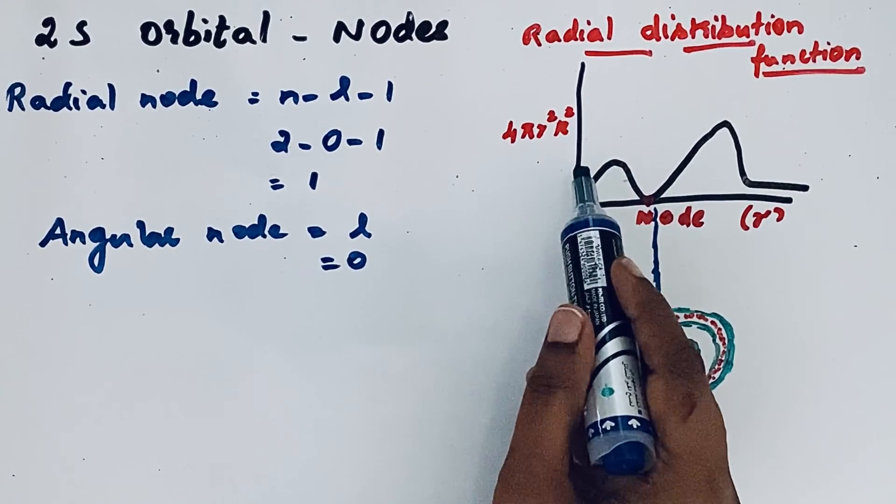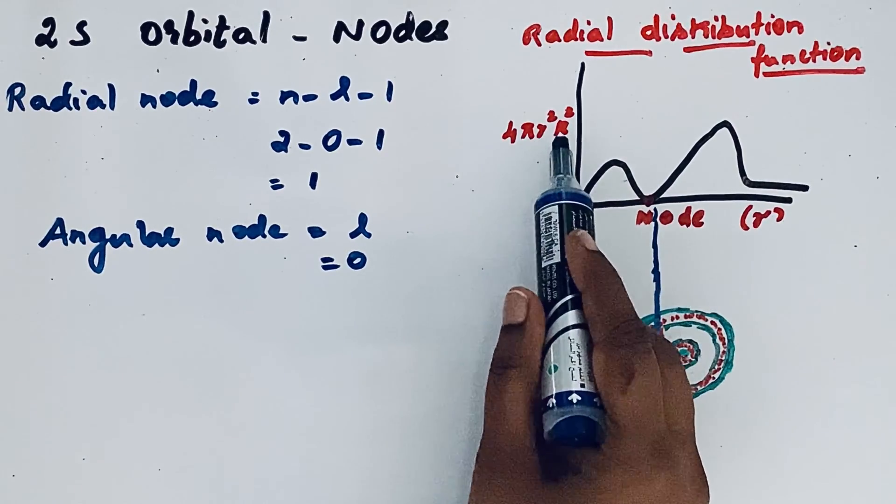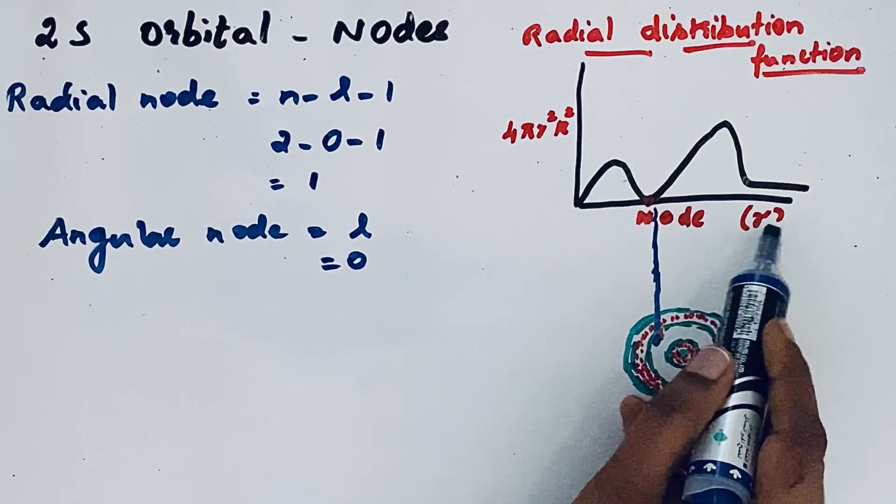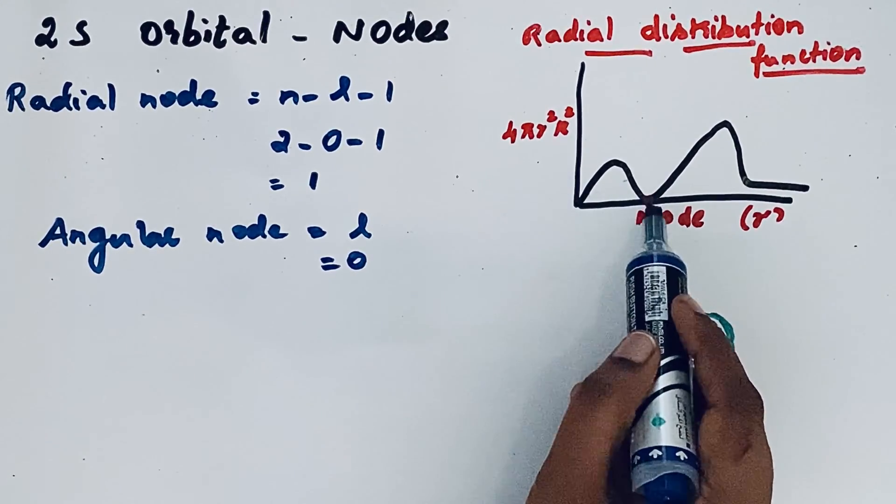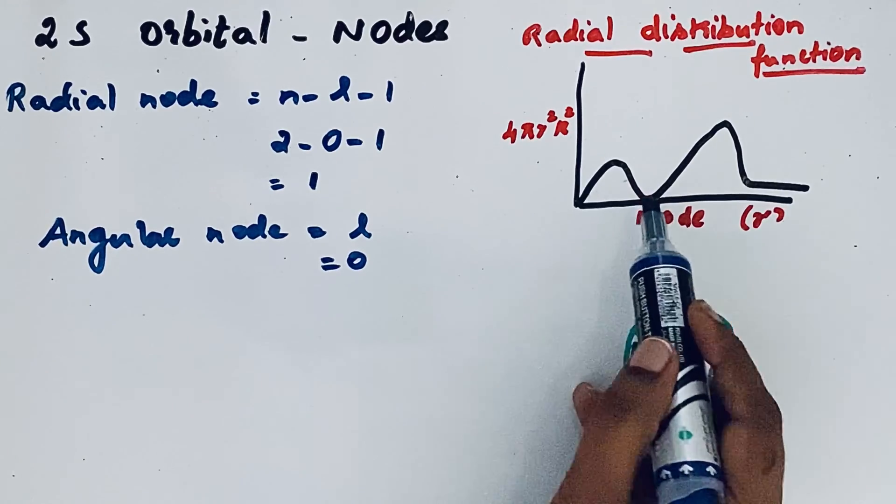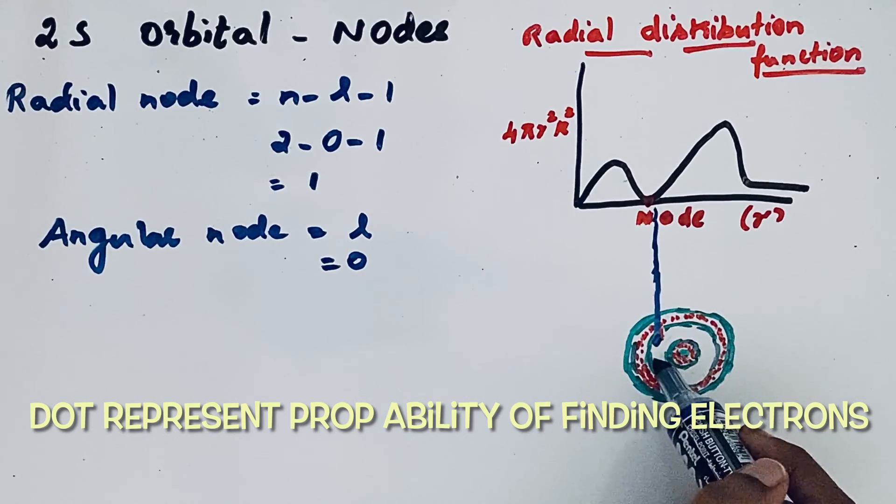This is the radial probability distribution curve which shows 4πr² with respect to r, radius. This is for the 2s orbital. So here you can see a node. The dot near the nucleus is greater. Then after that there is a node.